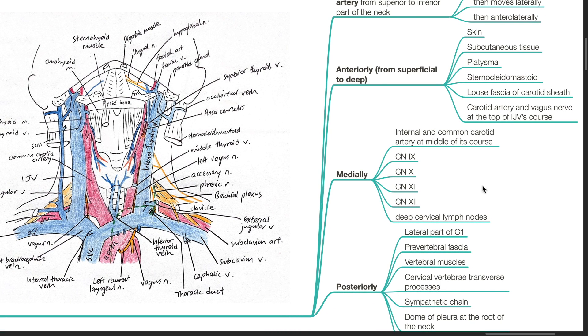Medial to the IJV are the internal and common carotid artery at the middle of its course, cranial nerves 9, 10, 11, 12, and the deep cervical lymph nodes.